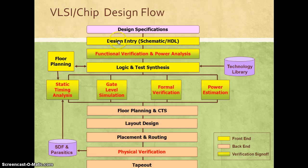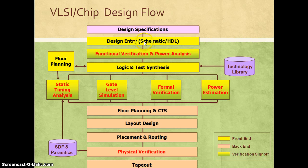Moving on to the second diagram, this flow chart explains the VLSI or chip design flow. We start with design specifications — in this stage we capture all the specifications that need to go into the design. Then we follow that with the design entry phase, where we capture the specifications either using a schematic tool or using an HDL, which stands for hardware description language. Some of the popular HDLs are Verilog and SystemVerilog in current silicon designs.